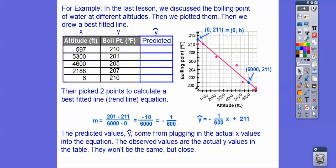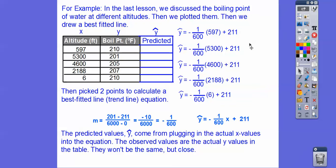We take that trend line, and the predicted values come from plugging in the actual x numbers into this equation. You plug these x-values in and they give us what's called a predicted value. They won't be the same as the observed values, but they're going to be pretty close. For example, if I plug in 597 into this formula, it'll get me a predicted value close to 210 — sometimes it's right on the money, but usually not. So here are all these x-values going into the equation, and when we crank all these numbers out, that gives us the predicted values.